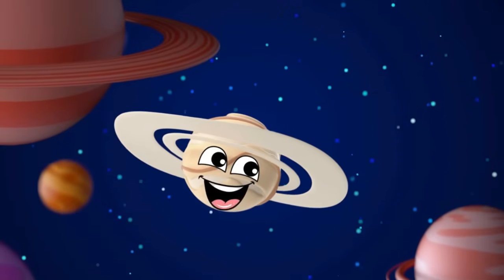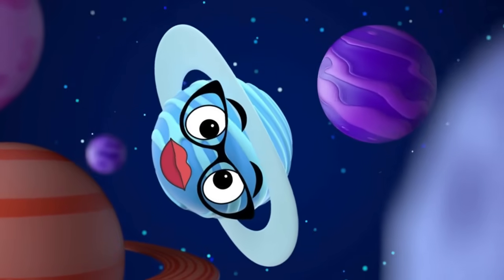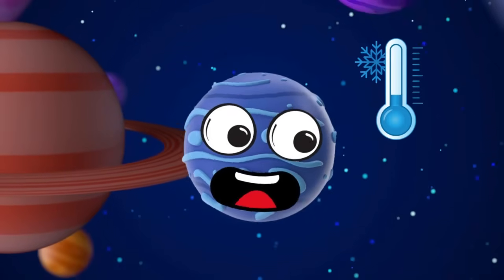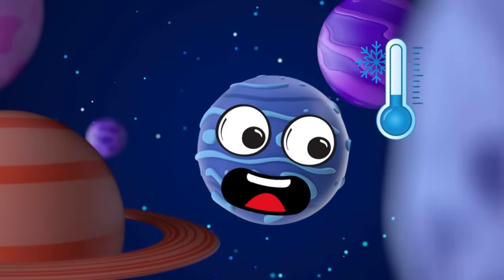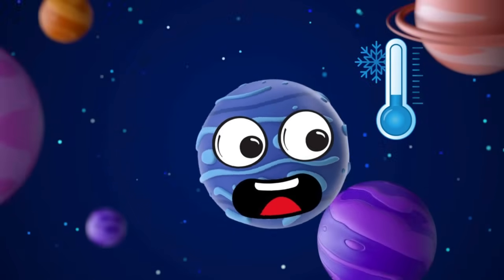Then we see Saturn's rings, spinning round in golden blings. Uranus tilts, it rolls on by, an icy blue ball in the sky. Neptune's far, it's last in line, so cold and blue, it's doing fine.